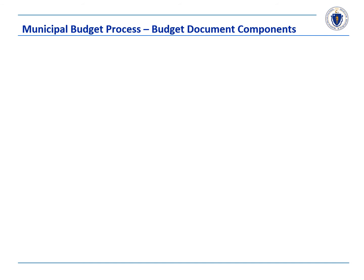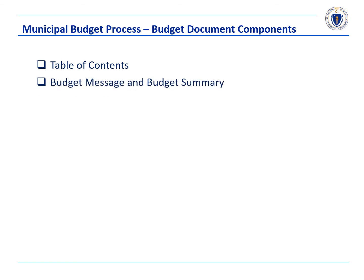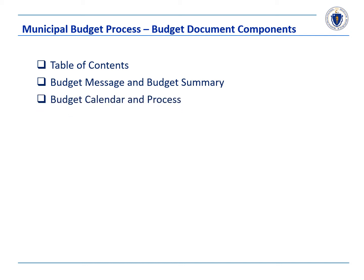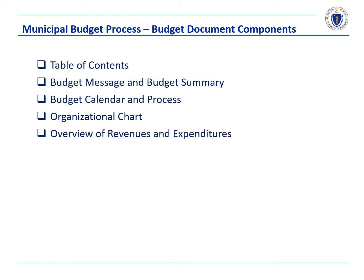The Government Finance Officers Association recommends several essential criteria to be included in a budget document, which are a table of contents, a budget message that states priorities and issues for the upcoming year, a budget overview that expands on the message, a budget calendar and description of the budget development process, and a municipality-wide organization chart outlining reporting relationships.